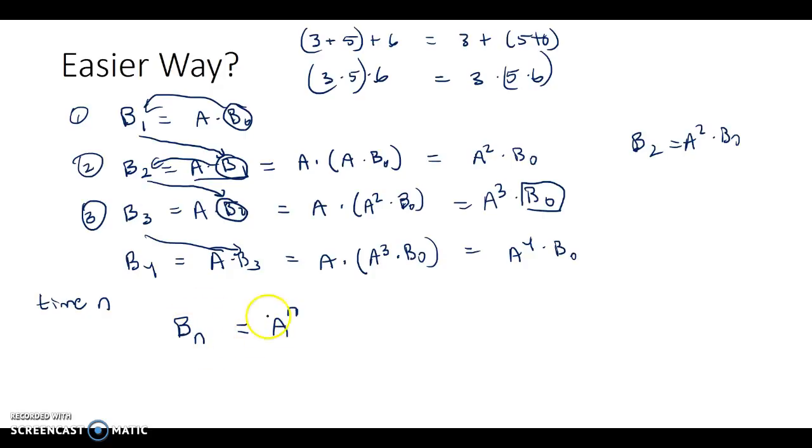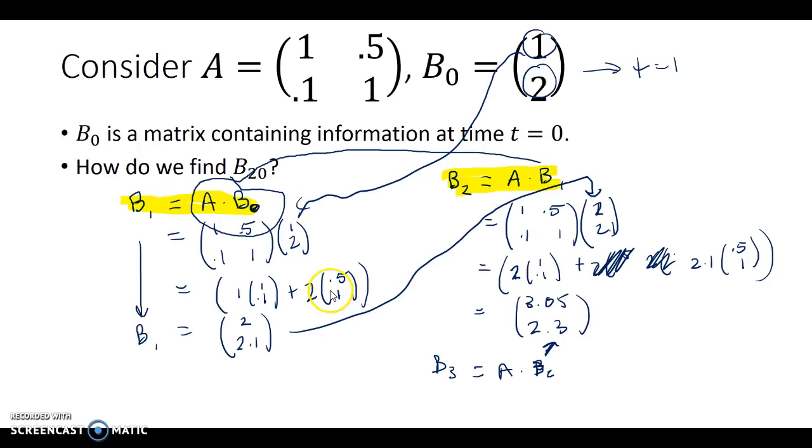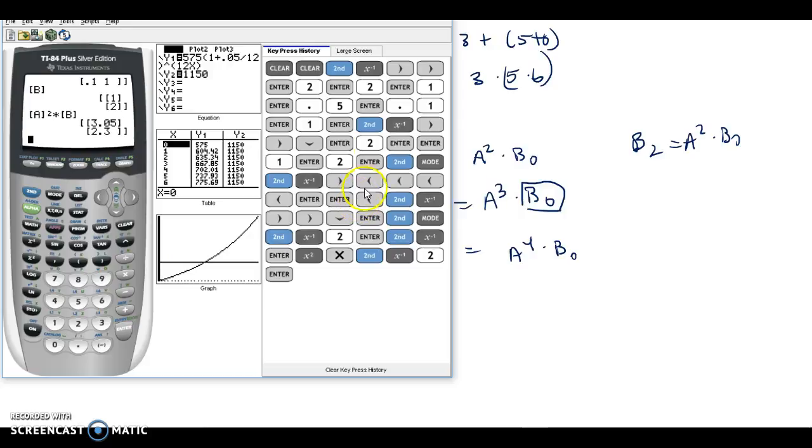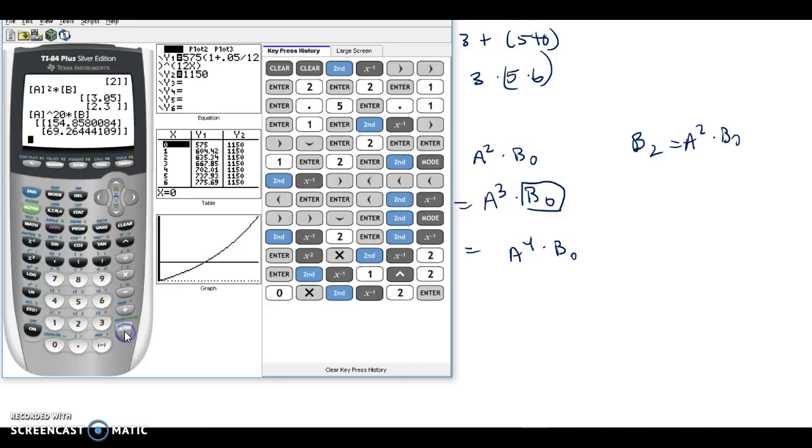To answer our question, what's the result at B20? I can take A to the 20th times matrix B, and I get an answer. I could say that according to these initial states of 1 and 2 for the B matrix, after 20 time units or 20 time transition increments, I now have the top component 154.85 or 86, and 69.26.